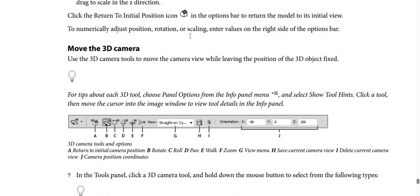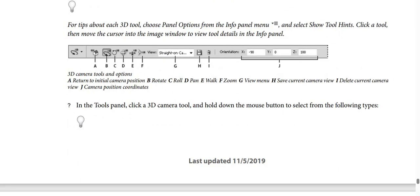How to move the 3D camera: You can use the 3D camera tools to move the camera view while leaving the position of the 3D object fixed. For tips about each 3D tool, choose Panel Options from the Information panel menu, then select Show Tool Hints, then click a tool and move the cursor into the image window to view tool details in the Information panel. The 3D camera tools and options are: A — return to initial camera position; B — rotate; C — roll; D — pan; E — walk; F — zoom; G — view menu; H — save current camera view; I — delete current camera view; J — camera position coordinates.